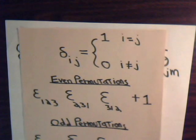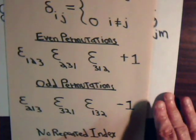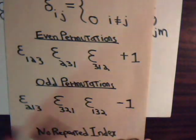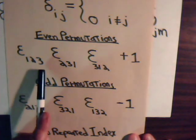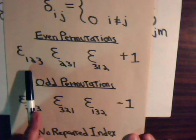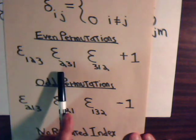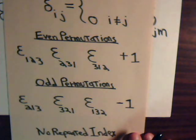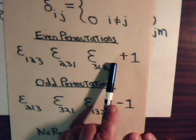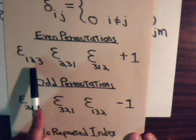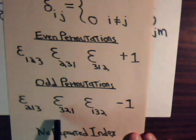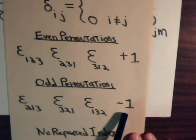Remember, from an earlier video — I think video number two — we explained that for the epsilon permutation symbol, this is the prototypical sequence, and that assigns a value of one to it, or any even permutation of one, two, and three, as you see here, also gives a value of plus one. Any odd permutation of this sequence generates a value of negative one.